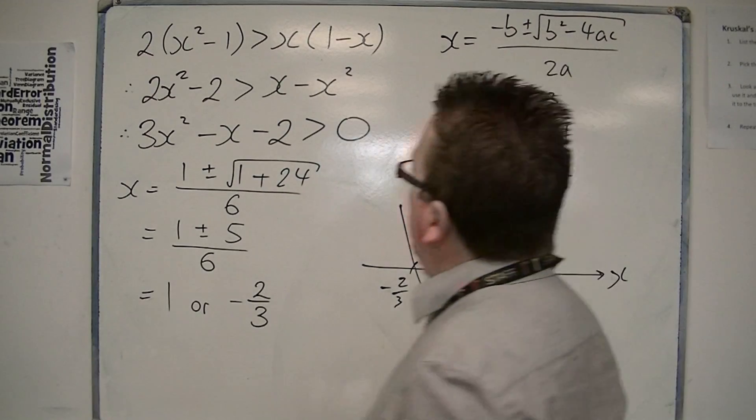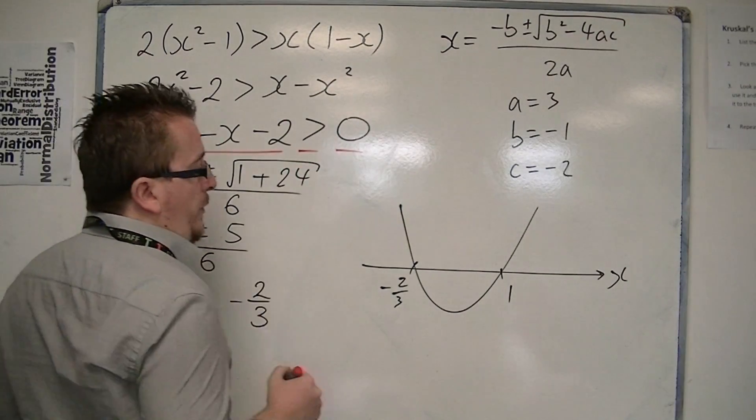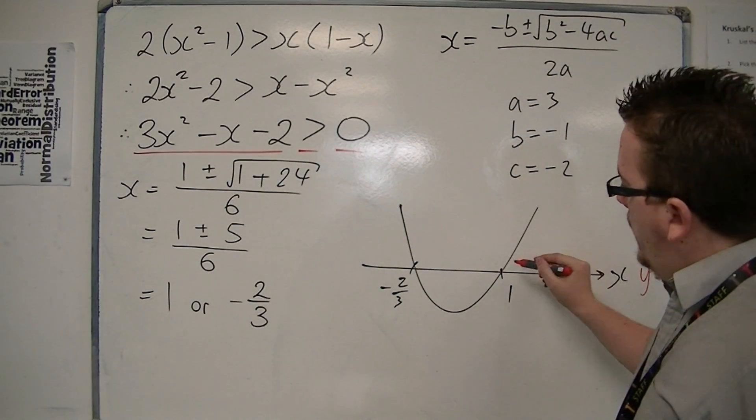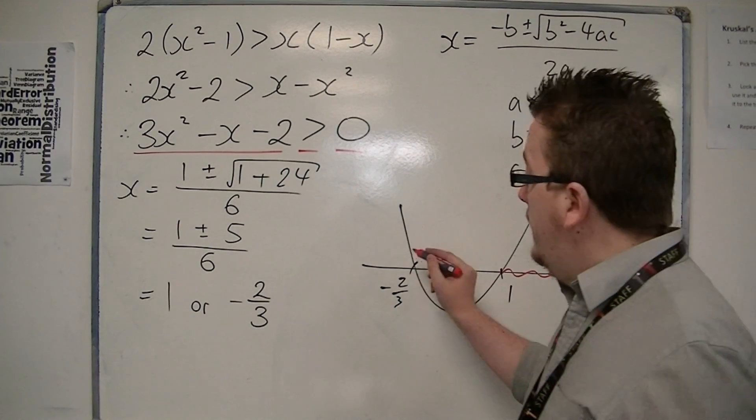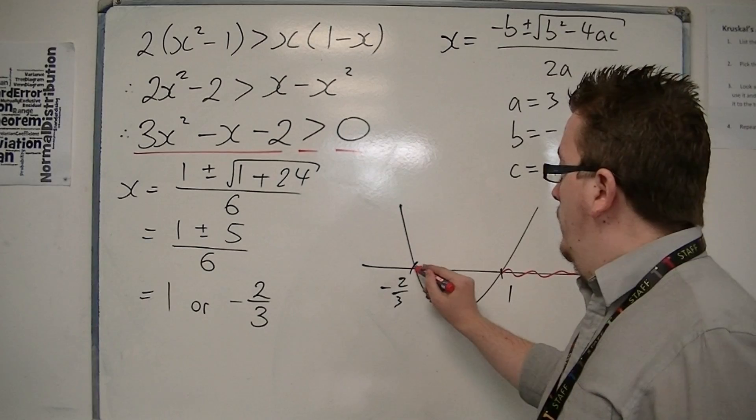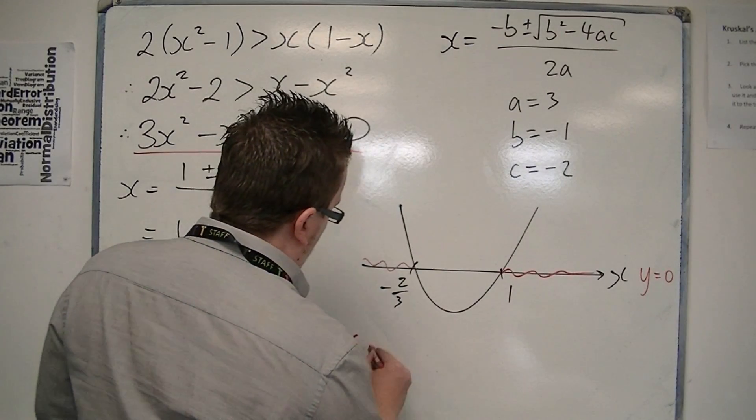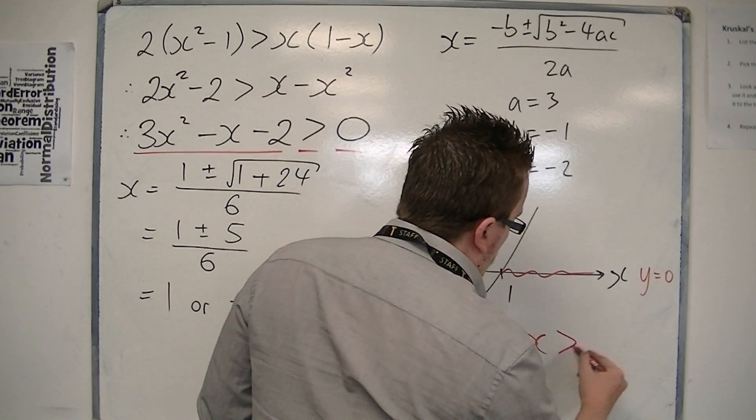where is the parabola above y = 0? Where is it above the x-axis? It's above it here and here. So the two solutions are x < -2/3 and x > 1.